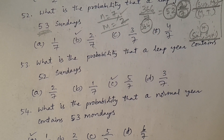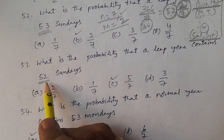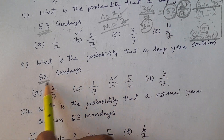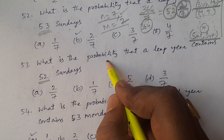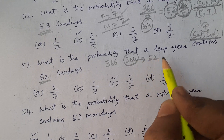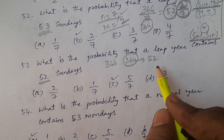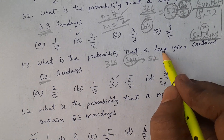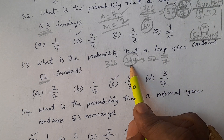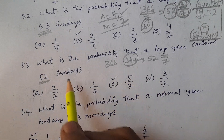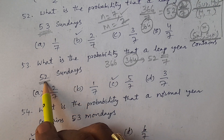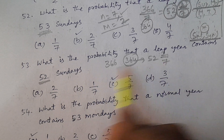What is the probability that a leap year contains 52 Sundays? In 364 days there are 52 Sundays. After those 364 days, 2 days remain. For exactly 52 Sundays, Sunday should NOT appear in the remaining 2 days.